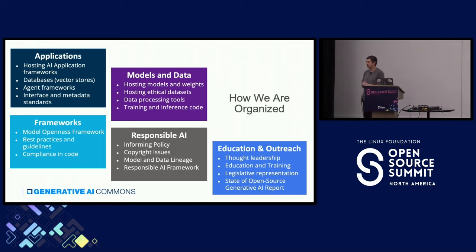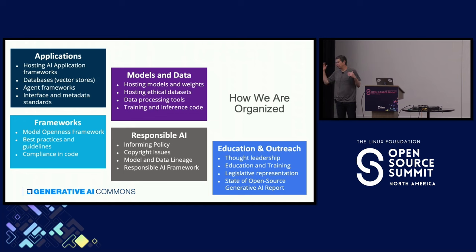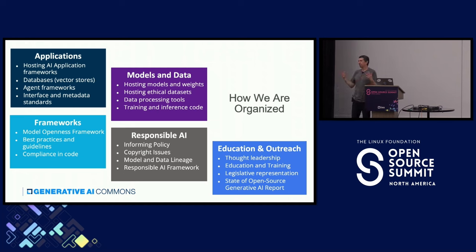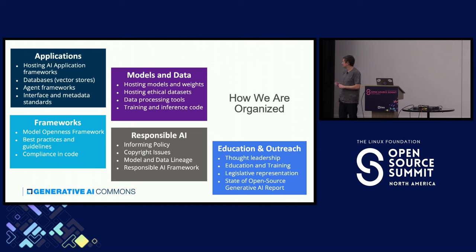The Frameworks work stream is running one of the most interesting activities we are doing, which is the Model Openness Framework. This is a framework that allows model contributors and the public to understand what is really open about a model. We created this framework with three tiers — the lowest tier is kind of open and the highest tier is really open — and each model contributor can assess their model according to our specifications and receive a badge indicating their level of openness.